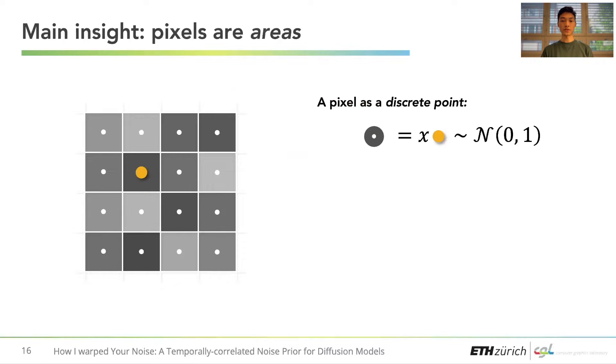Our main insight is to interpret a pixel value not as associated to a discrete point, but rather as the result of integrating an underlying continuously-defined signal over the pixel area. Any continuous signal can be used as long as it is consistent with the integrated discrete observations.